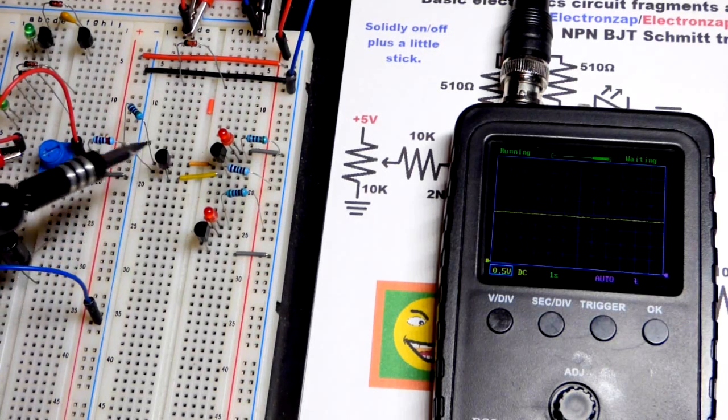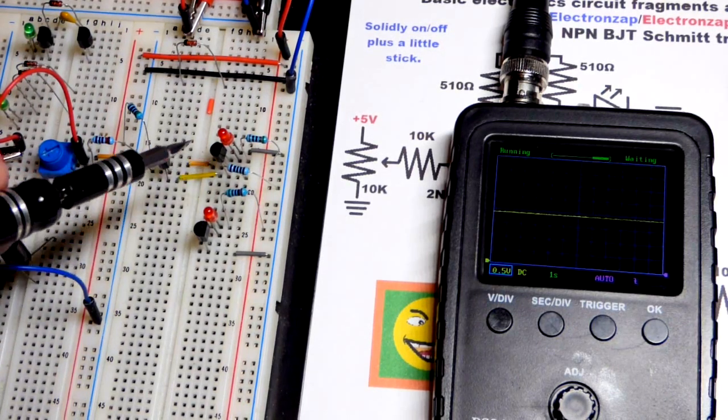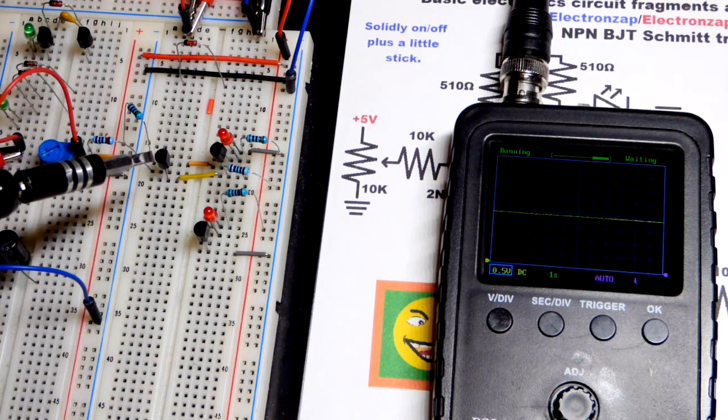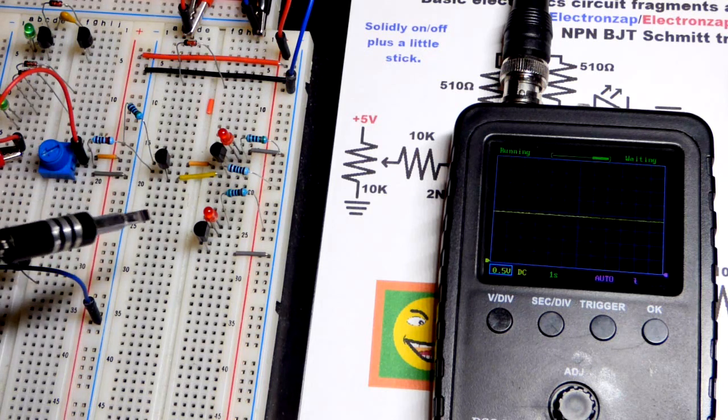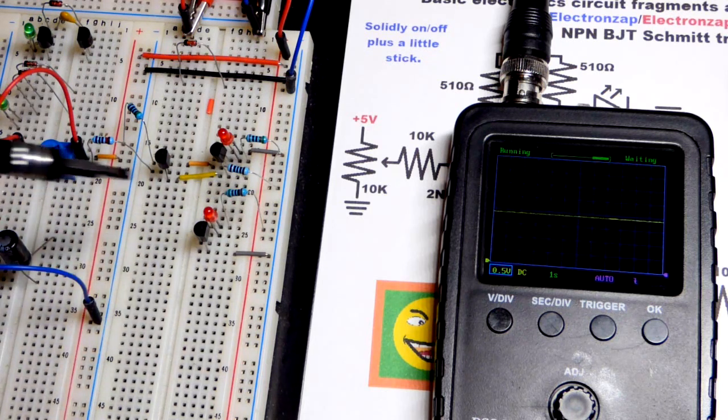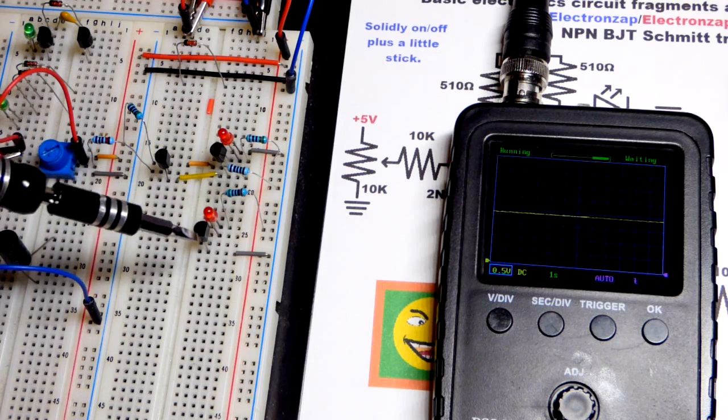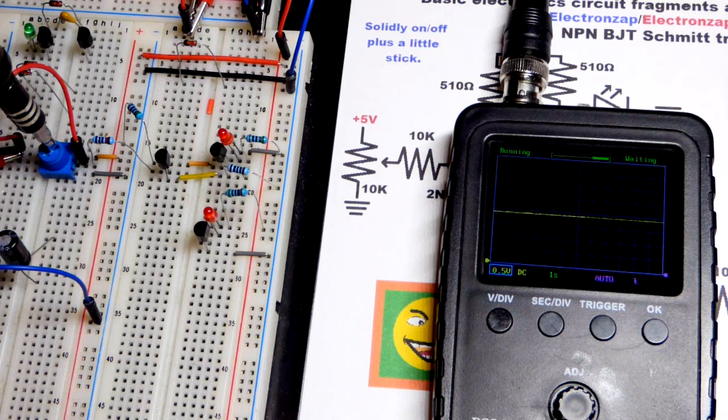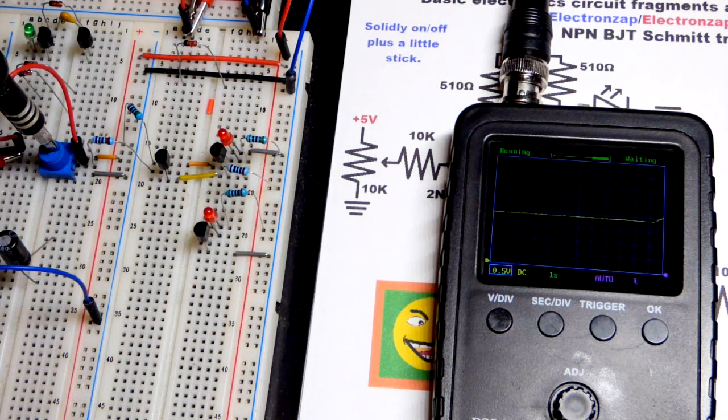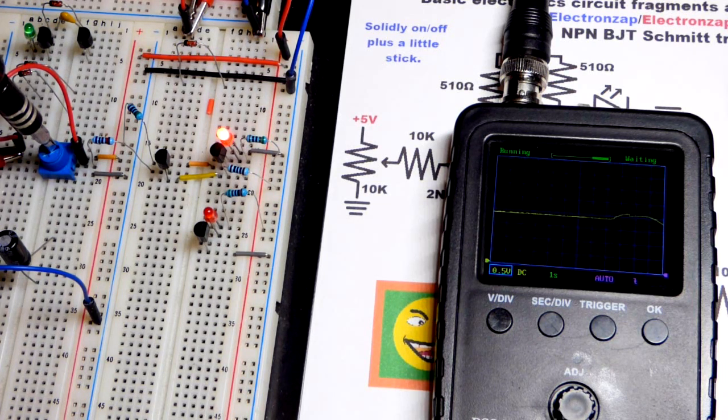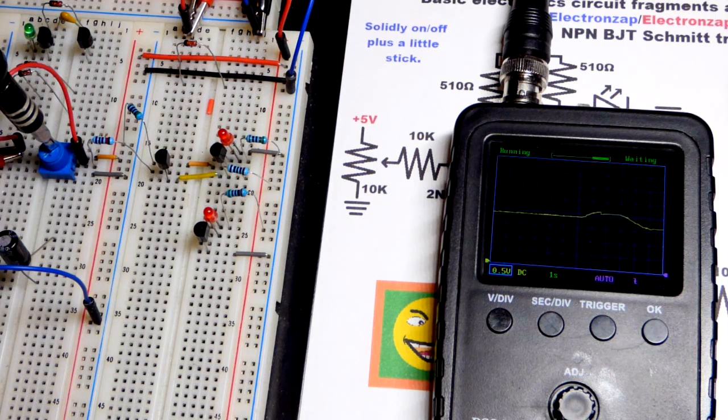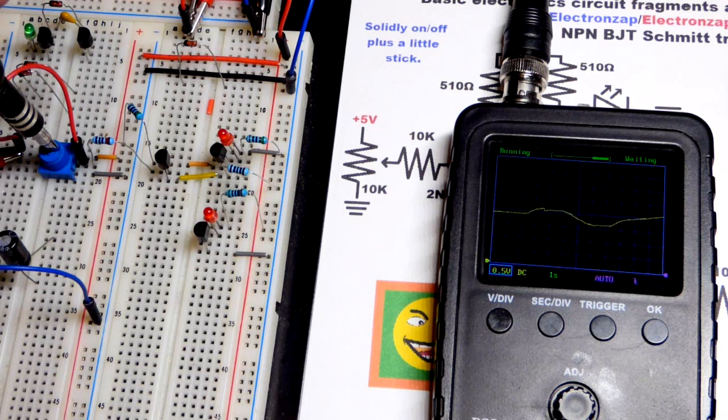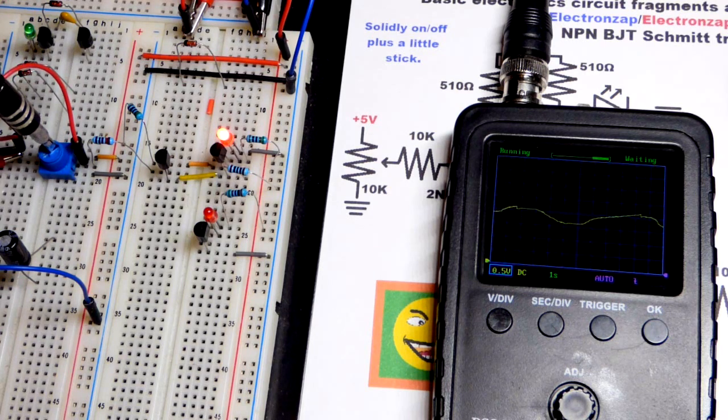So now in this video we're going to look at using the NPN bipolar junction transistor, we need two of them as a Schmidt trigger. Normally we've been using the transistor switch like this, but with the Schmidt trigger we're going to take our varying voltage and there you can see the LED suddenly turned on and now the LED suddenly turned off even though we're slowly changing the voltage right there.